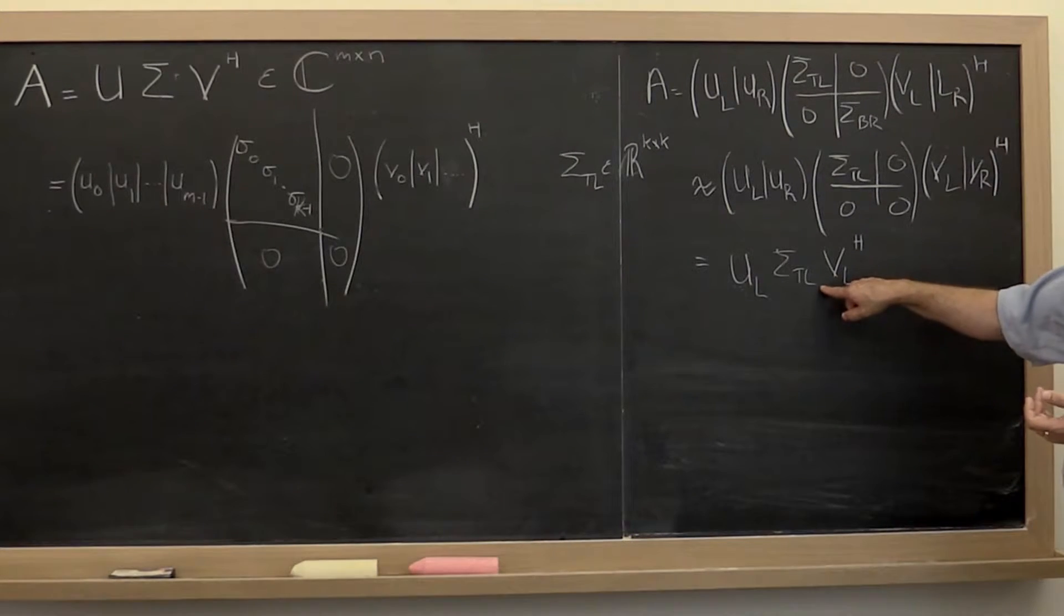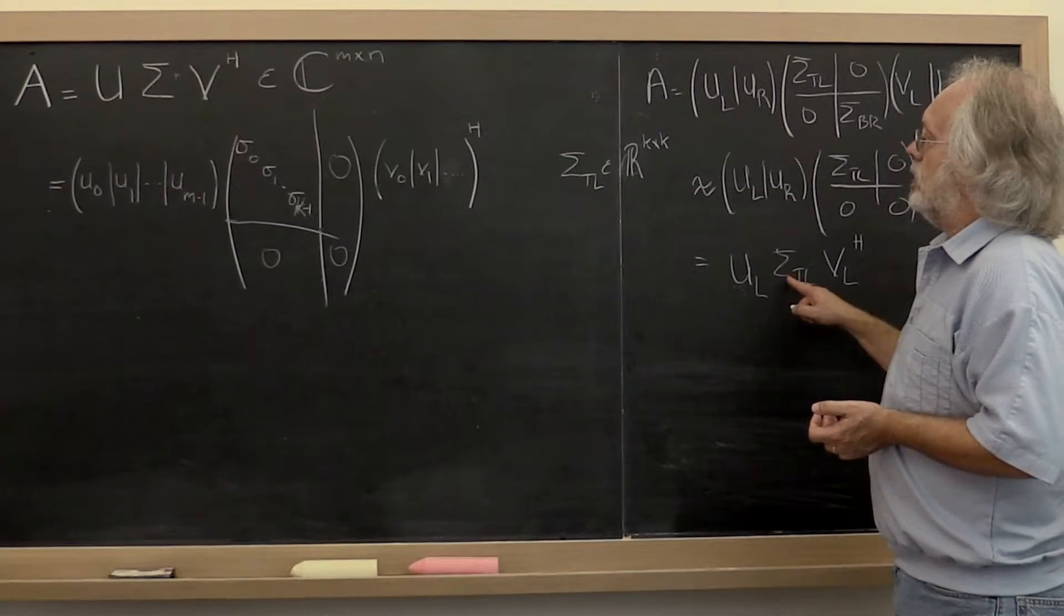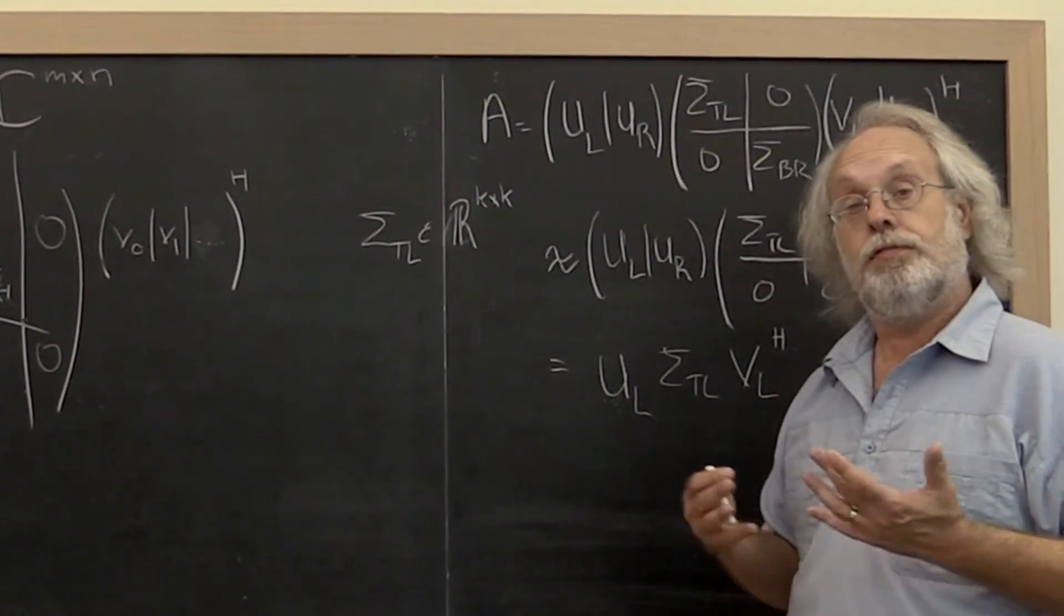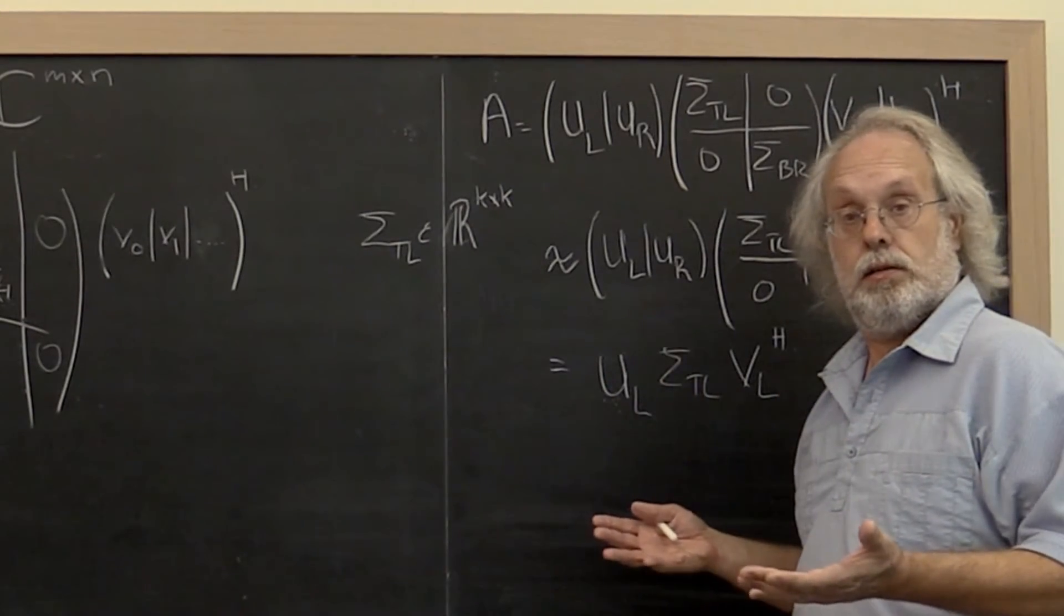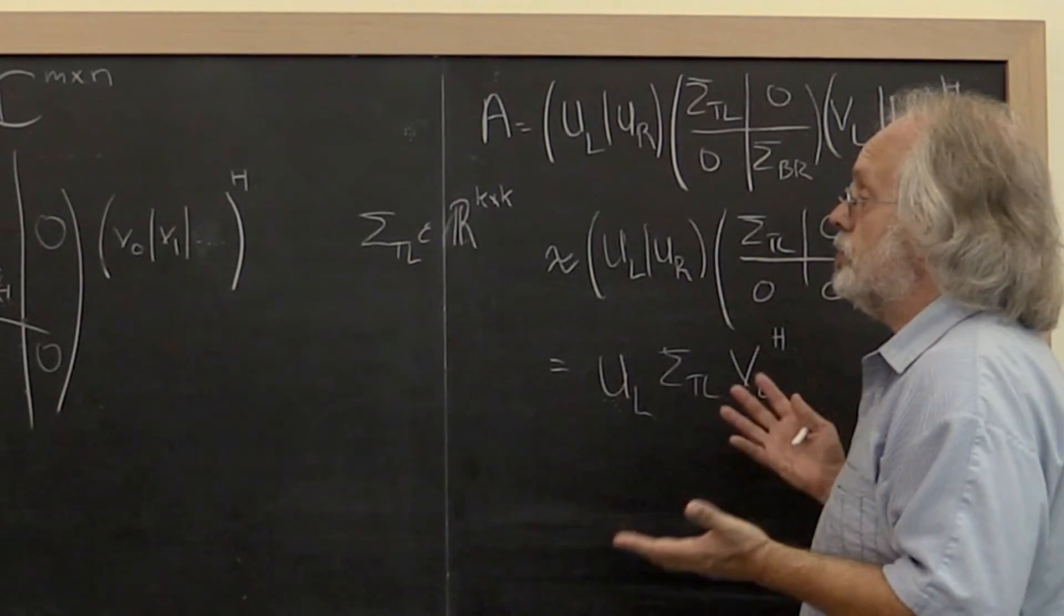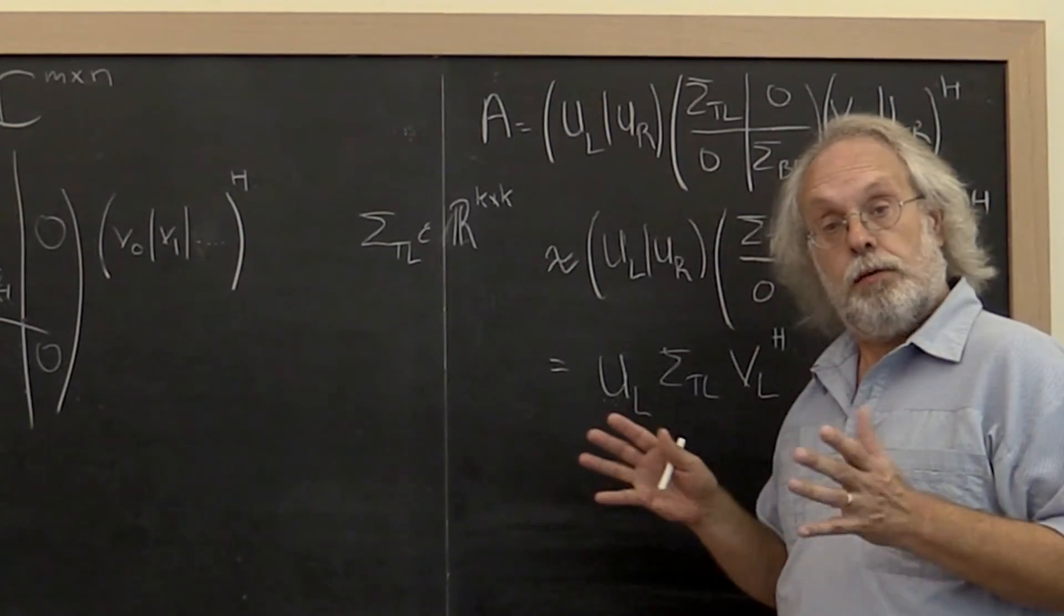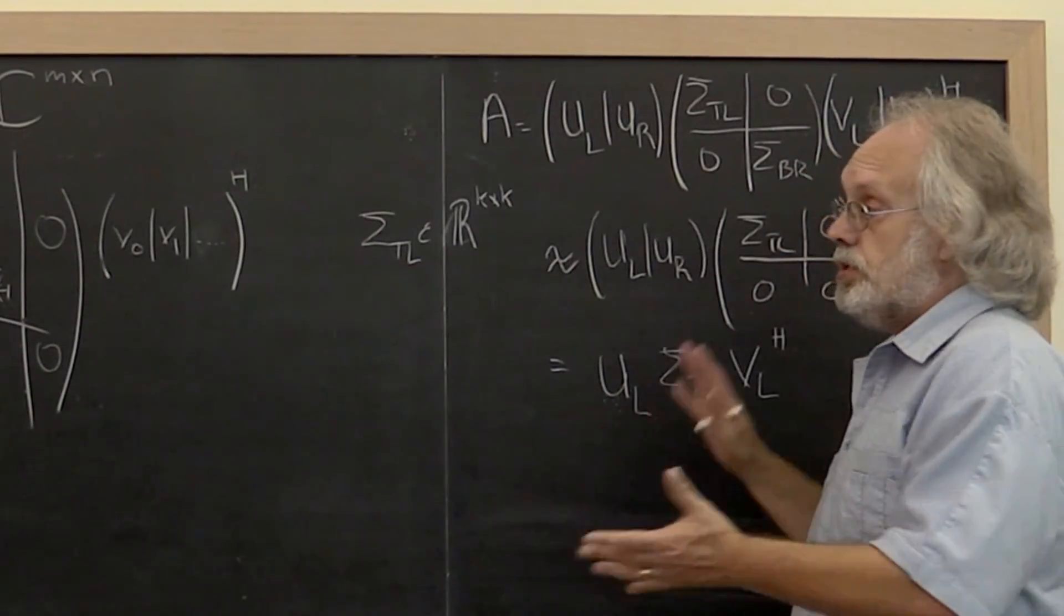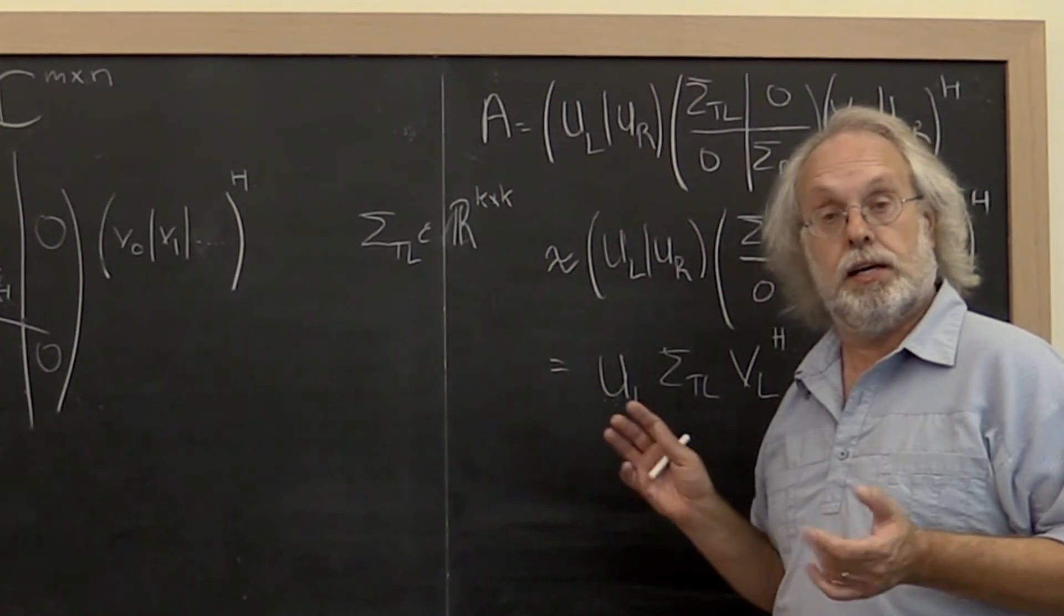And this matrix right here is the matrix of rank k that is closest to the original matrix A. Often this is used to approximate the matrix and to filter out noise that may be in a matrix or in a picture that you view as a matrix. So this is actually a very, very practical insight.